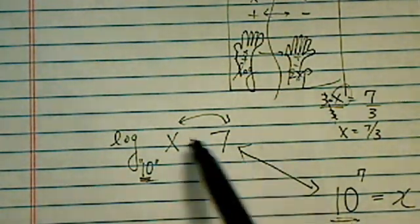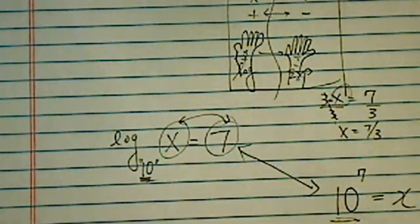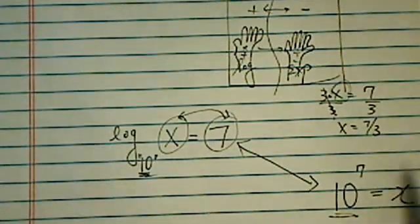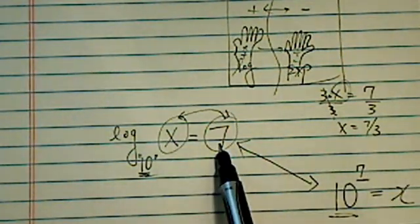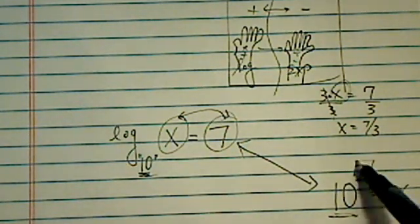So, keep the base the same, but you swap those two numbers, and since it's exponents, you put 7, whatever you took over from the other side of equal sign, you put it on the exponent part.